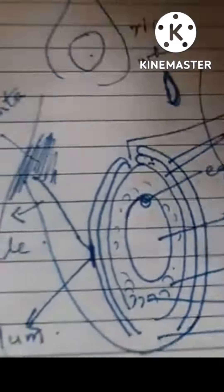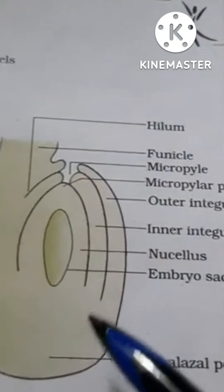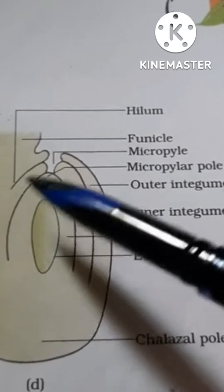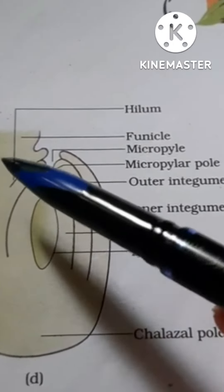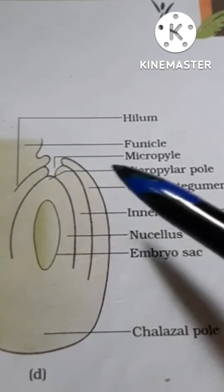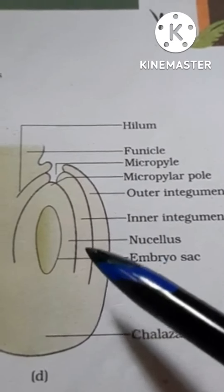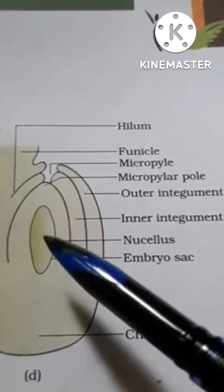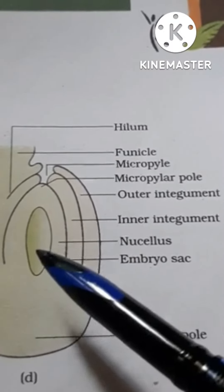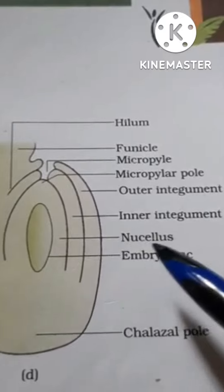The same picture you will find in the textbook, and this is what you have to study. You can see the hilum — the point of attachment of the funicle with the ovule. You can see the micropyle and the micropyle pole, the outer integument, the inner integument, and the embryo sac inside the ovule.